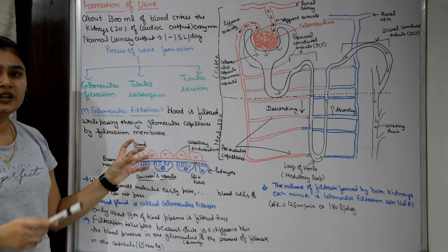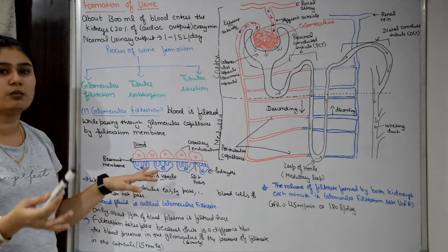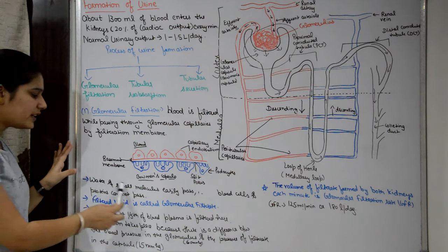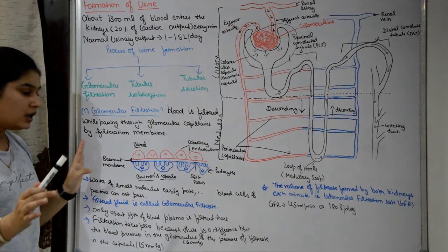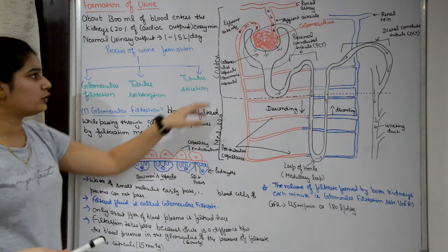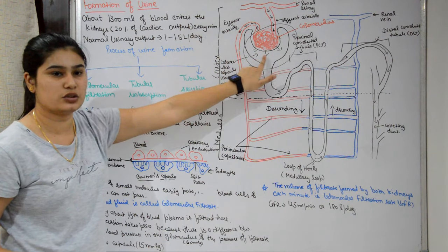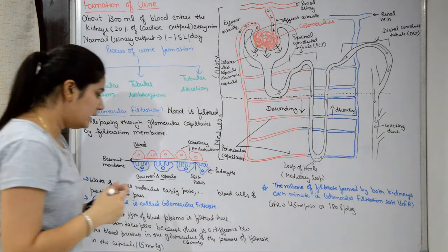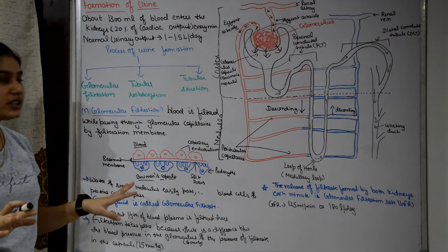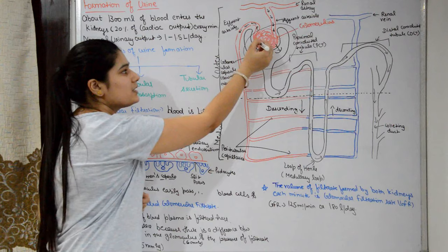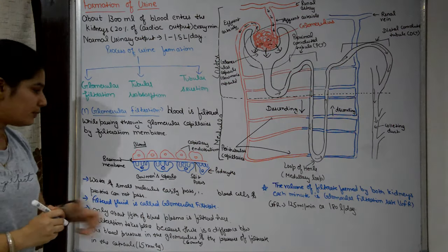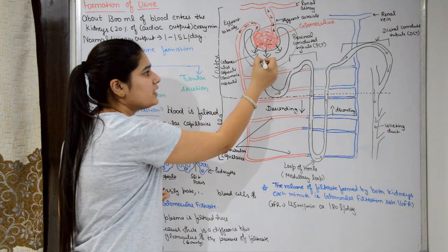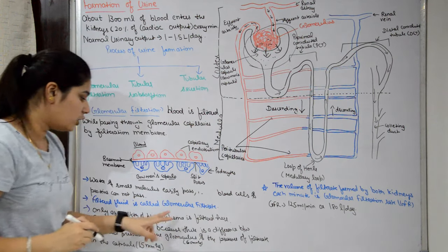Through this semi-permeable membrane, large molecules cannot pass while small molecules like water easily pass into the filtration space of the Bowman's capsule. Water and small molecules pass through, but proteins cannot. Blood cells and proteins, due to their large size, remain in the glomerular capillaries. The fluid that is filtered is called the glomerular filtrate.